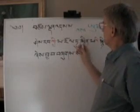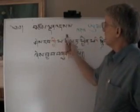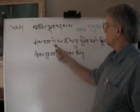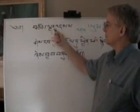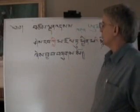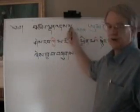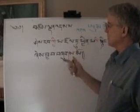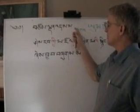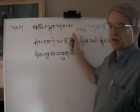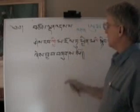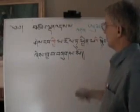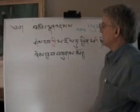Still in the title, what we have next is a phrase that's in apposition to the Bhagavati or the Chomdendema. So if we were translating into English, we'd say we have Bhagavati, and then a comma, and then set off this next part with a comma at the end as well.